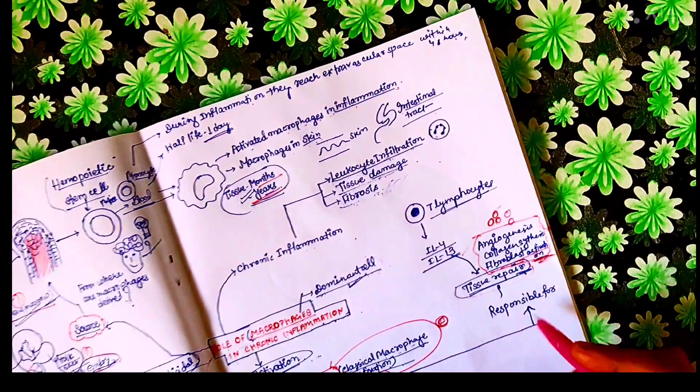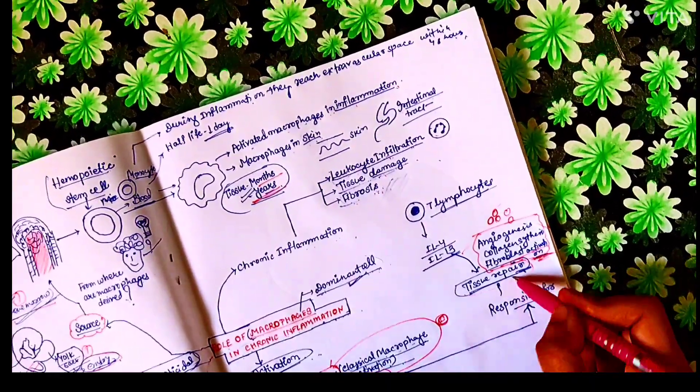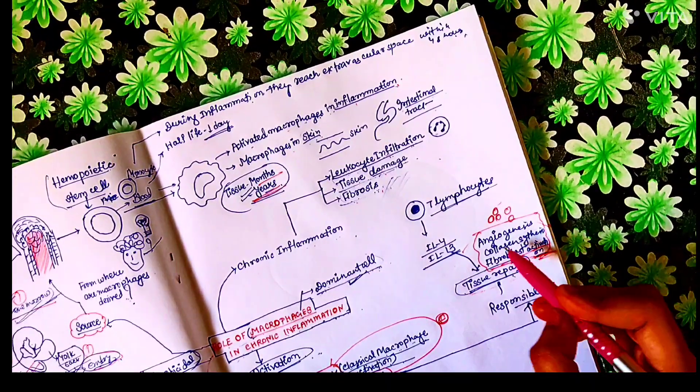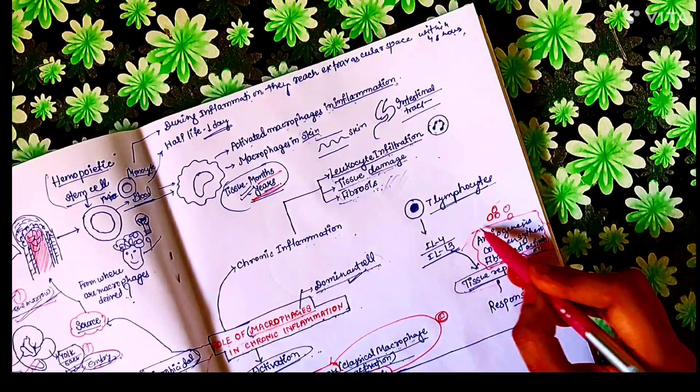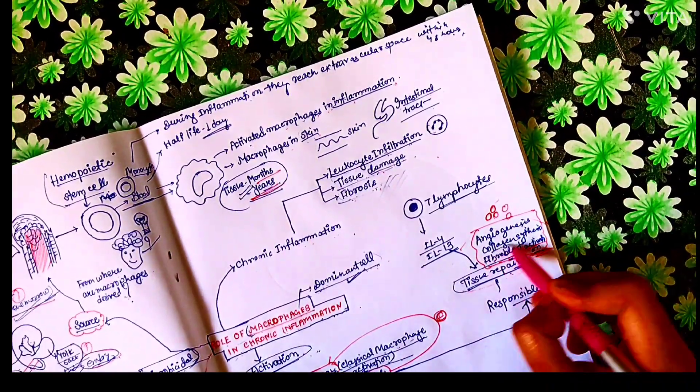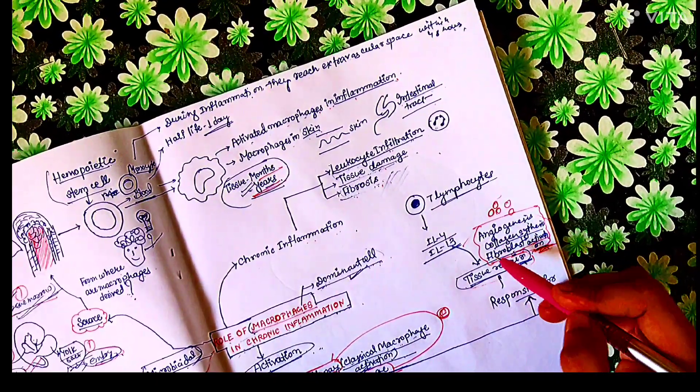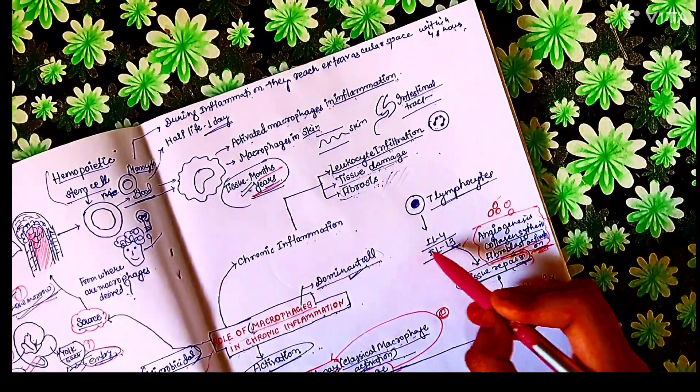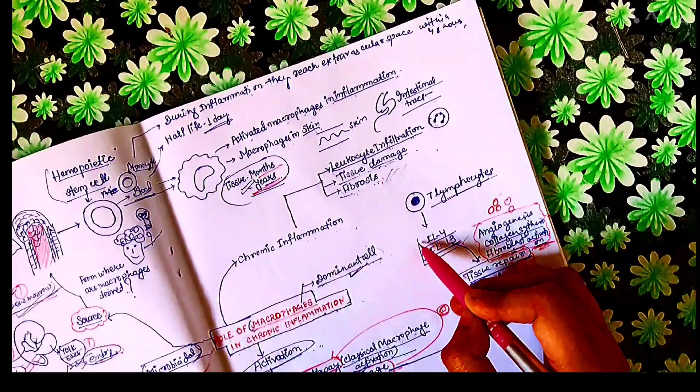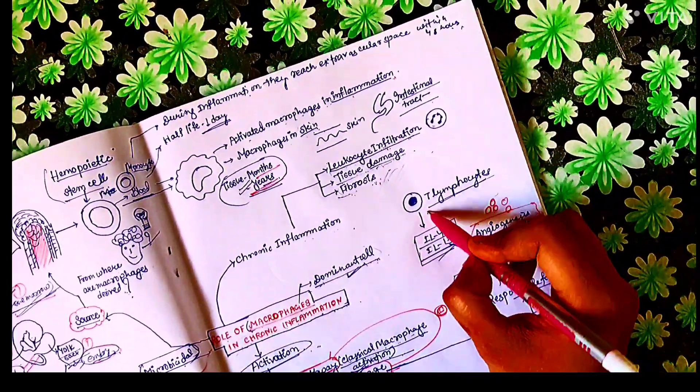And this alternative macrophage activation pathway is responsible for repair of tissue by inducing angiogenesis, that is blood vessel formation, by causing collagen synthesis and by activating the fibroblast. So how does this happen? This happens by secretion of cytokines like interleukin-4 and interleukin-13 from T-lymphocytes.